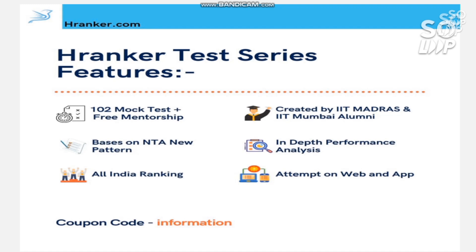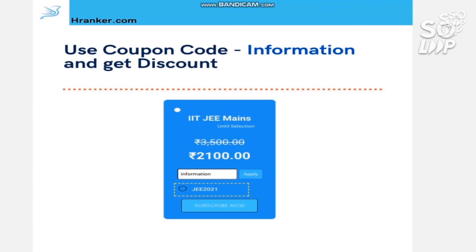After giving each test in this series you will get an All India ranking and a full analysis of which topics are strong and which are weak for you. There are topic-wise tests and whole syllabus tests. You can attempt it on web, mobile, laptop or computer. Use the coupon code 'information' to get a discount of 1400 rupees, and enroll by paying just 2100 rupees.